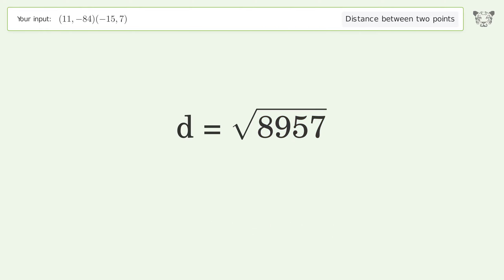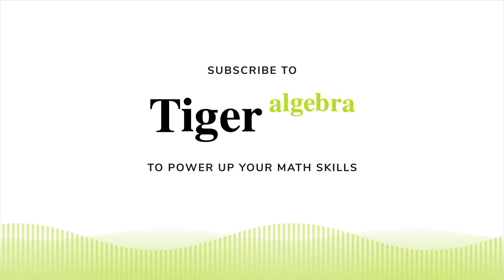And so the distance between the two points is the square root of 8957, or 94.641. Thank you.